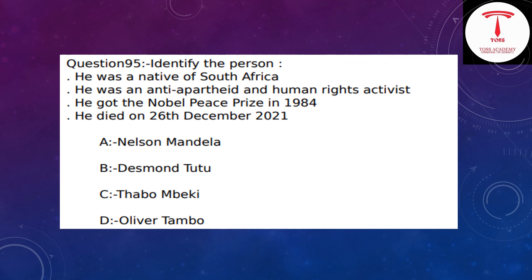Question number 95: Identify the person. He was a native of South Africa. He was an anti-apartheid and human rights activist. He received the Nobel Prize in 1984. He died on 26 December 2020.